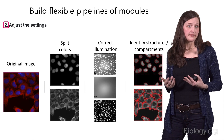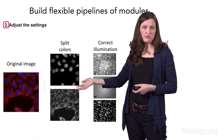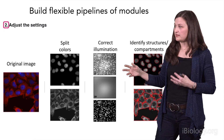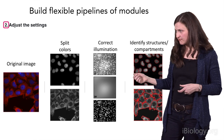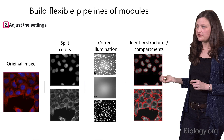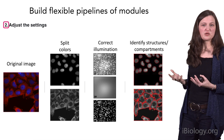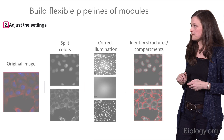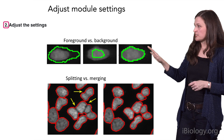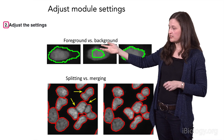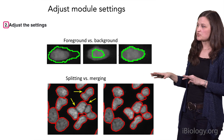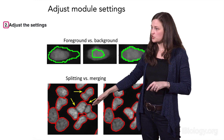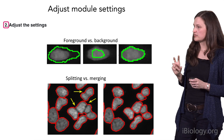You mix and match modules to build a pipeline, or workflow, that accomplishes your task. Some steps are very trivial, for example splitting the colors of a multi-channel image. Some steps you might not have thought of before — such as correcting the illumination, which is very important to improve the quality of the quantification you get. Once you've pre-processed your images, you can put in modules that identify structures and compartments of interest, such as nuclei or cell borders. You'll need to adjust settings for foreground versus background — too lenient, too stringent, or just right — as well as settings for splitting versus merging objects, such as nuclei that appear stuck together.